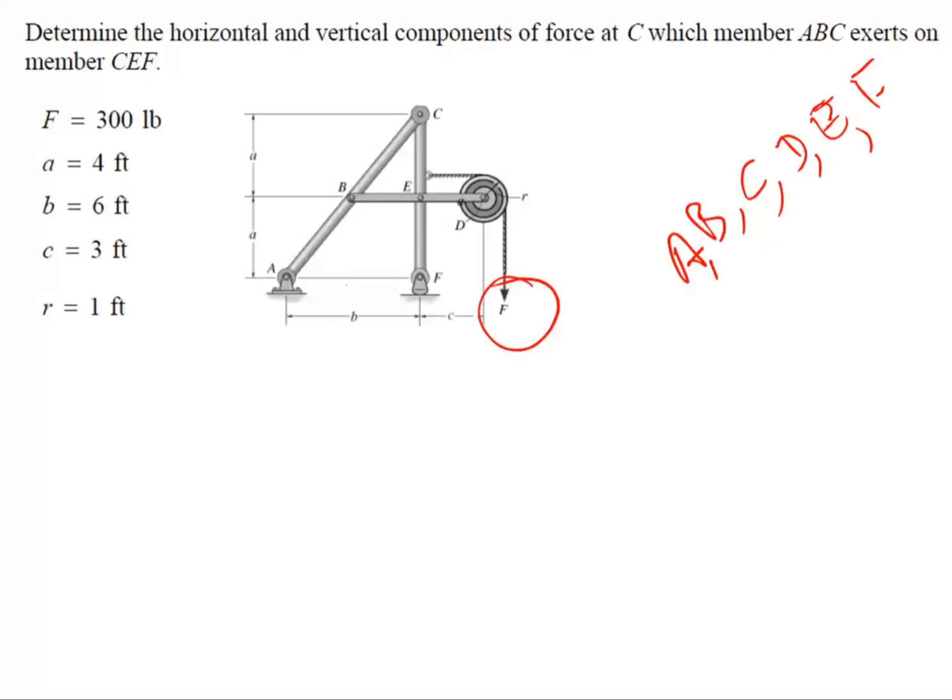Let me draw the free body diagram of the pulley. Pulley says that there's a force here which is 300 and there's also a pull force here. It's a rope, so 300. And I've got point D. So I've got two reaction forces. This is 300 also and this is also 300. So at point D I know the forces.